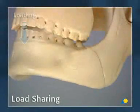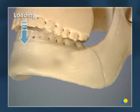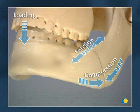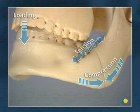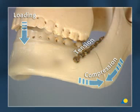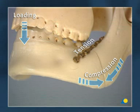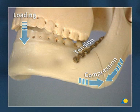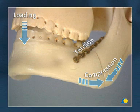Loading across a mandible angle fracture leads to tensional forces at the oblique ridge and compressive forces at the lower border. These tensional forces can be borne by a 2.0 mandible mini plate positioned on the oblique ridge of the mandible. The compressive forces may be borne by the fracture surfaces, particularly at the lower border, provided there is an intact bone buttress. Therefore, load sharing takes place when the load across the fracture is shared between the fixation system and the fracture surfaces.